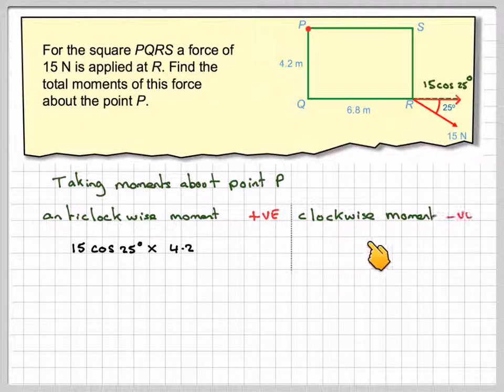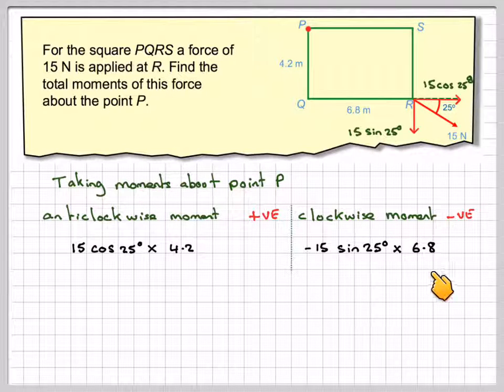And the clockwise one, remember is negative, is going to be this one here, this force here, which is going to be 15 sin 25. And that's going to cause the square to turn clockwise. So it's going to be minus 15 sin 25 times the perpendicular distance from the point P, which is 6.8.